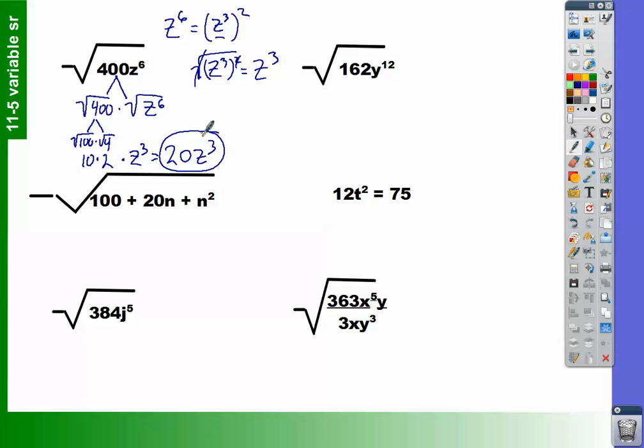So if we were to look at the next one, now I know that 162 is not a perfect square. It is not a perfect square. So we're going to have to break this apart again into the square root of 162 and times the square root of y to the 12. So let's deal with the number first, since you've been dealing with these for a while. What goes into 162 that is a perfect square?